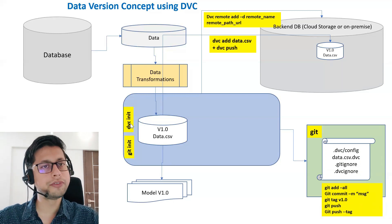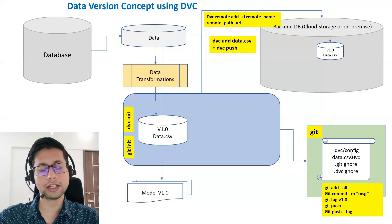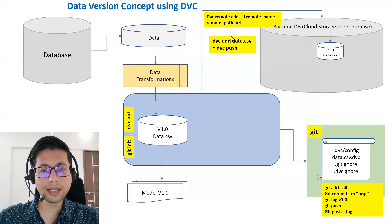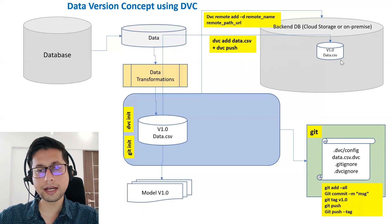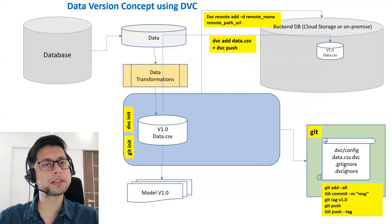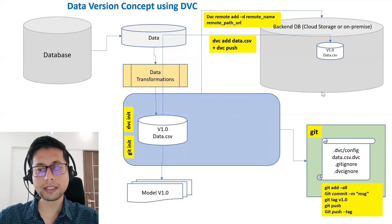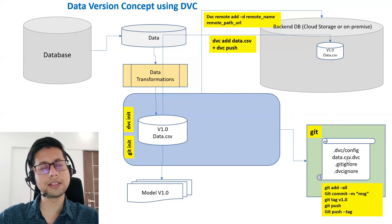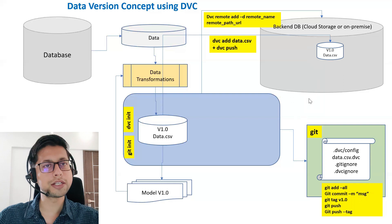When you run dvc init it creates .dvc/config. The config file holds references such as what your backend DB remote name is. When you run dvc add data.csv, the data is pushed to the backend DB and it generates a data.csv.dvc reference file, which holds the reference of where the data has gone and which version it is. A .gitignore is also generated so that data.csv itself is not pushed to git — since it's already maintained in the backend database. These are all small metadata files stored in git, with references pointing to your remote DB where the actual data is stored.